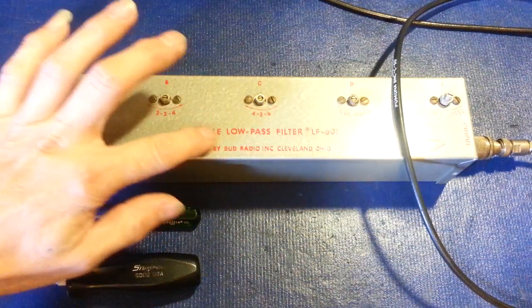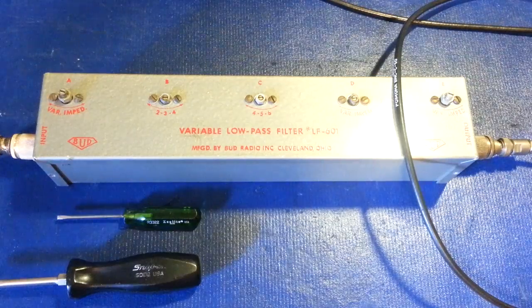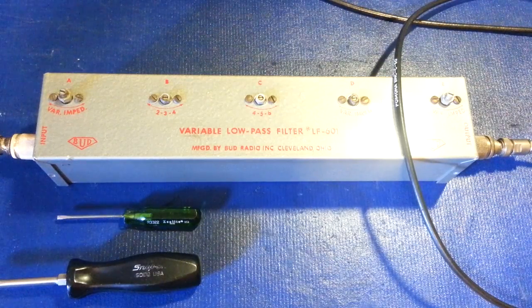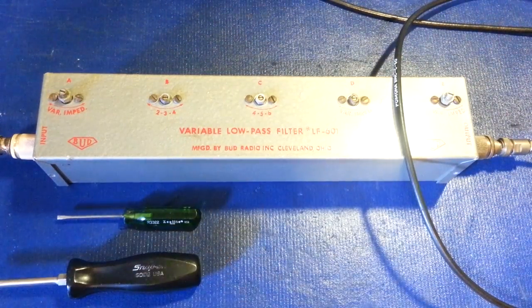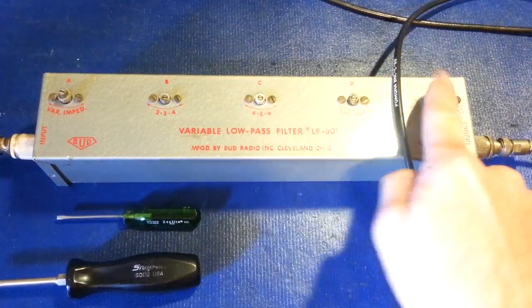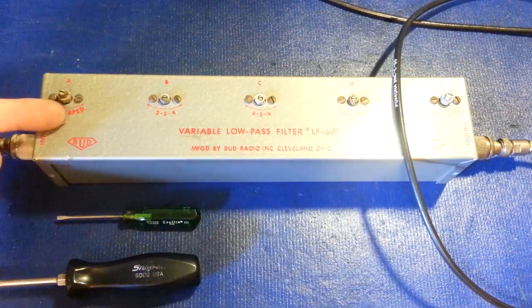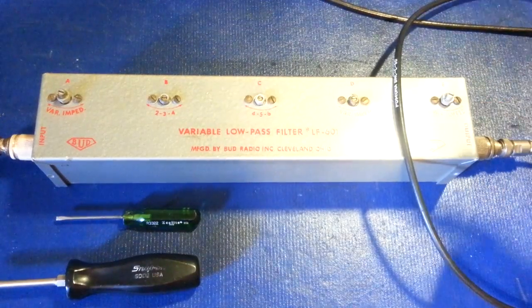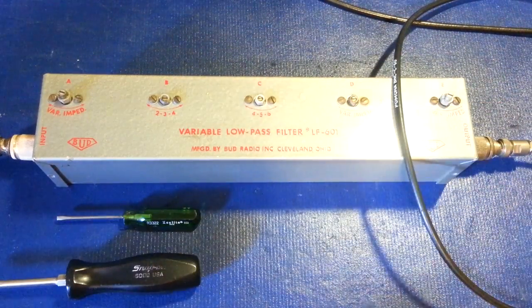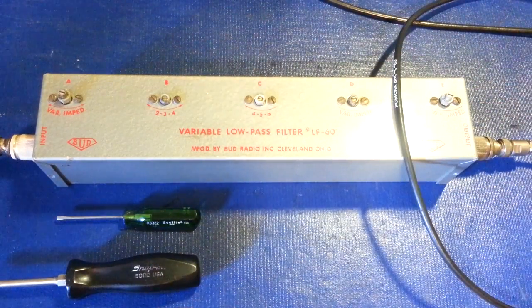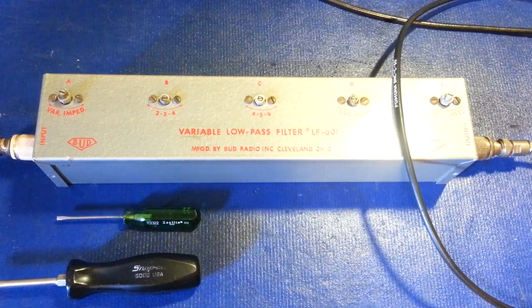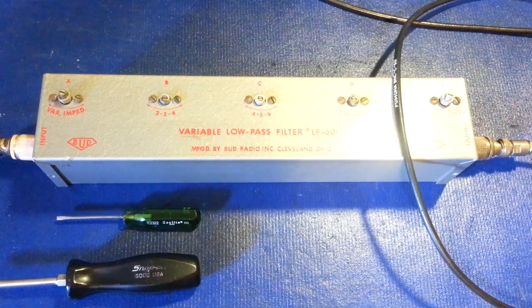Most low-pass filters you see today are going to look almost exactly like this minus these five controls, which are variable capacitors. It's just going to be a metal box, coax in, coax out, and some coils inside. This one's adjustable.